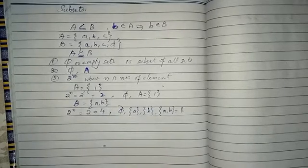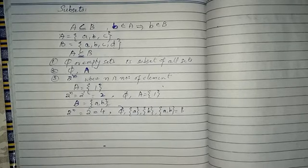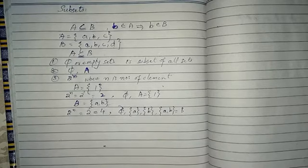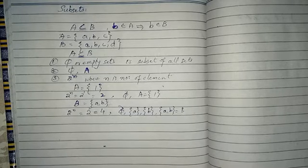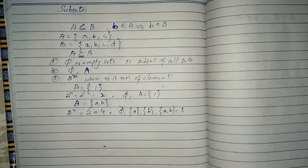So we have seen three conditions: phi is the subset of all sets; if set A is a non-empty set then it must have two subsets which are phi and itself; and the third condition — the formula 2^n — is used to compute how many subsets any set can have.